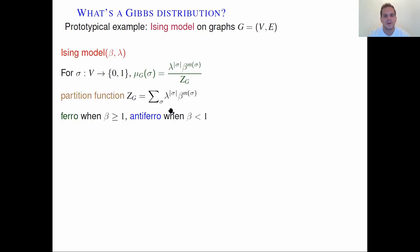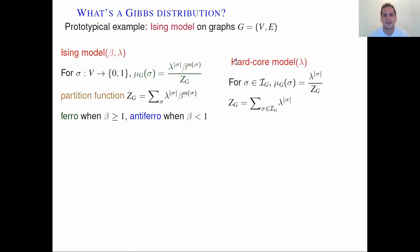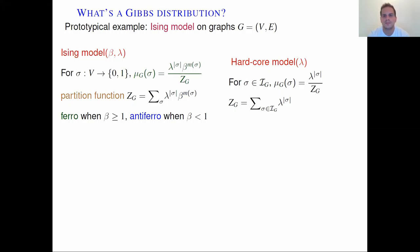The partition function is given by the aggregate weight over all spin assignments. The model is called ferromagnetic when beta is greater or equal than one, and antiferromagnetic otherwise. In particular, when beta is less than one, configurations with monochromatic edges are disfavored. Independent sets can be cast into that framework in the so-called hardcore model with external field lambda. Configurations of the model are all independent sets of the graph G, and the weight of an independent set is given by lambda raised to the size of the independent set. You can view the hardcore model as a two-spin system by assigning spin 1 to vertices in the independent set and spin 0 otherwise.